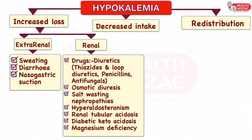Renal loss may also be present in clinical conditions like osmotic diuresis, salt wasting nephropathies, primary and secondary hyperaldosteronism, renal tubular acidosis, diabetic ketoacidosis, and magnesium deficiency.